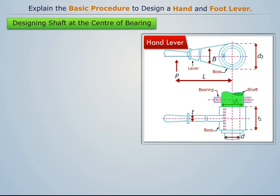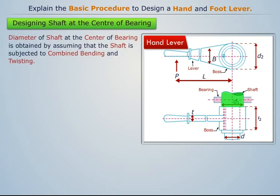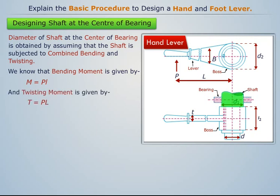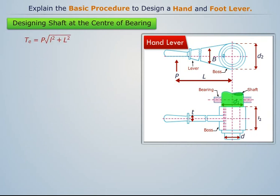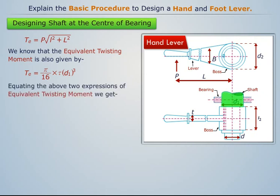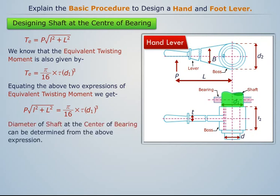Now let's design the shaft at the center of bearing. For this, we need to determine the diameter of the shaft at the center of bearing. This can be obtained by assuming that the shaft is subjected to combined bending and twisting. The bending moment and twisting moment are given by known expressions. Therefore, the equivalent twisting moment can be determined. We know that the equivalent twisting moment is also given by another expression. Equating the above two expressions of equivalent twisting moment, the diameter of the shaft at the center of bearing can be determined.